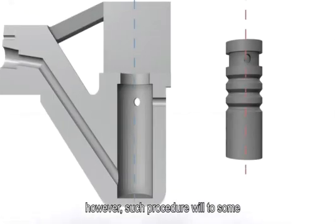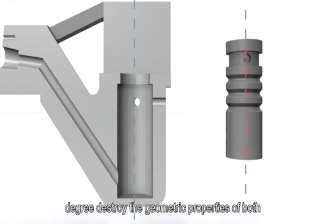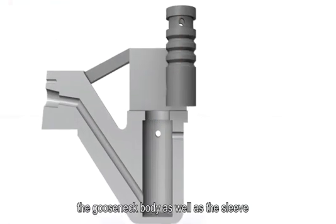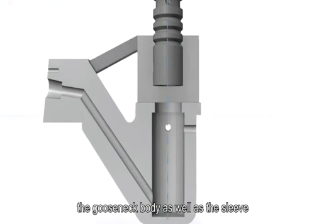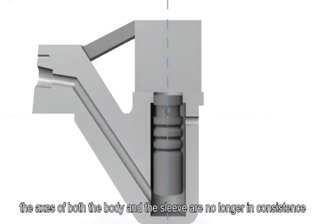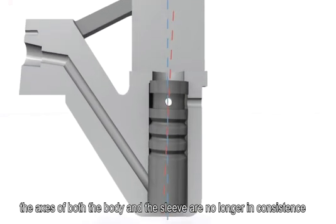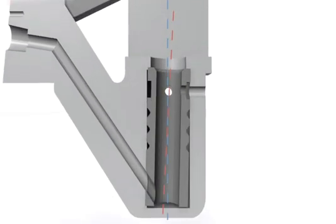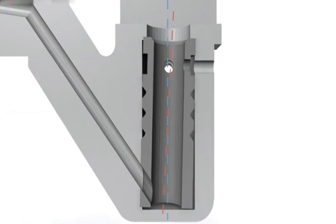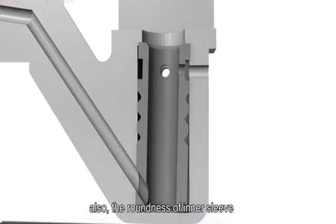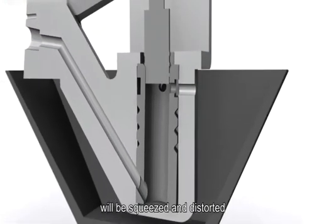However, such procedure will to some degree destroy the geometric properties of both the gooseneck body and the sleeve. The axes of both the body and the sleeve are no longer in consistence. Also, the roundness of the inner sleeve will be squeezed and distorted.